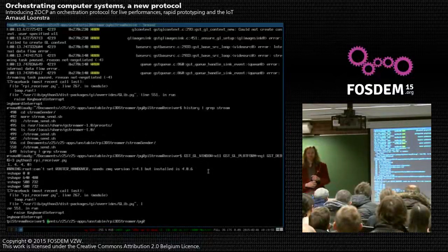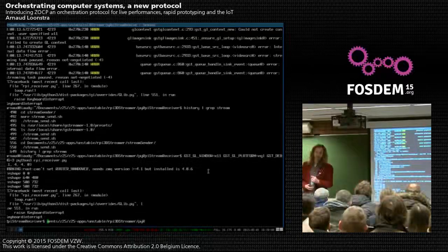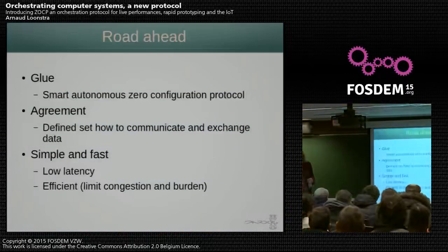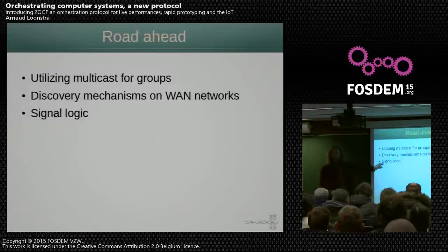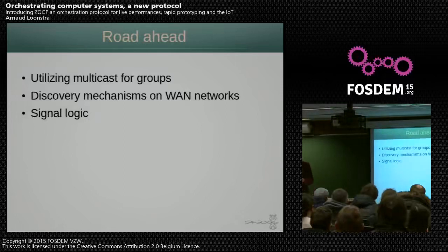What if nodes are not in the same network — they're on some other network? First of all, we use multicast for discovery, so your network has to support multicast. Discovering across networks is actually one of our research topics we're still working on. In Zyre there's also a gossip model where they can gossip, but we're looking into more methods.